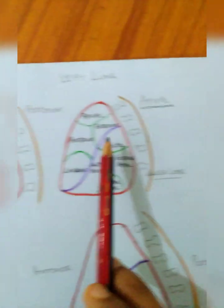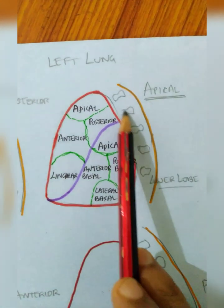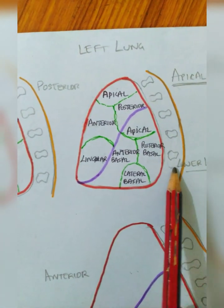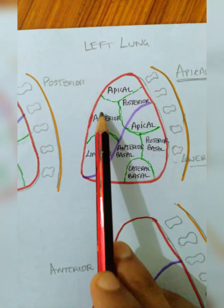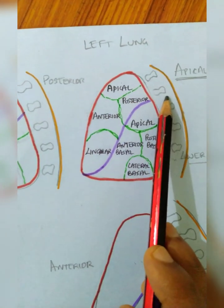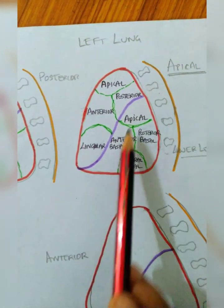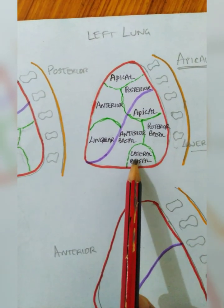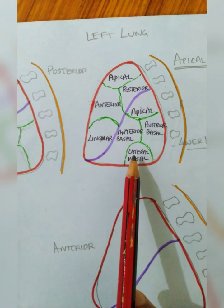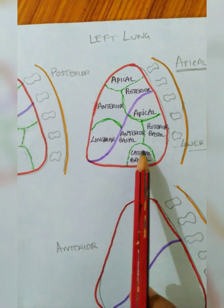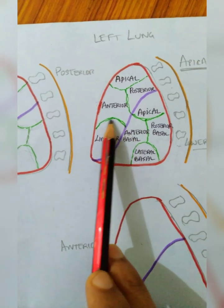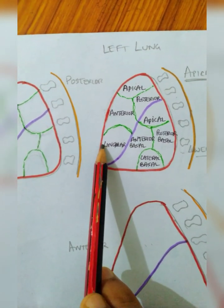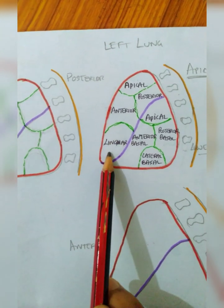Now we can name the segments. This is the anterior portion and this is the posterior portion of the left lung, and we are viewing this on the lateral aspect of the lung. This is the apical portion, this one is anterior, and this portion is posterior. Here also: apical, then anterior basal, posterior basal, and this portion is lateral basal. There is no medial portion for the lower lobe in the left lung. The upper lobe has got a lingular portion, which we can divide into superior lingular and inferior lingular.